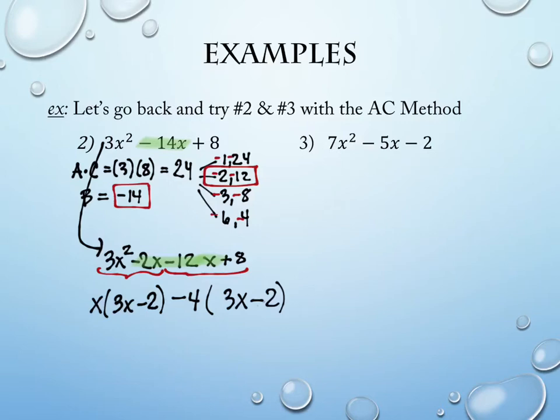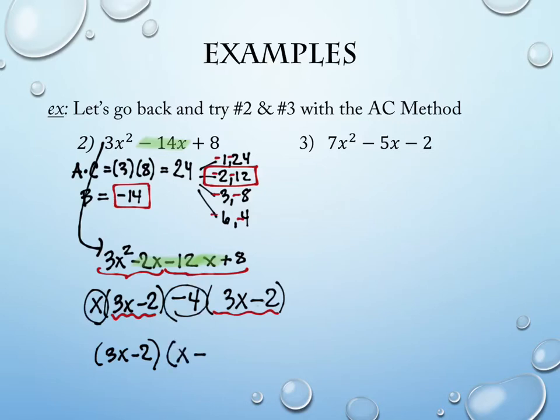At this point they match, which is what I wanted. We can pull that out in front. So now I can write this as (3x minus 2), and the pieces left over are in the other factored piece: (x minus 4).